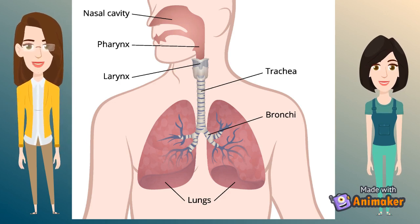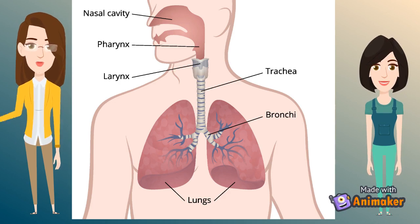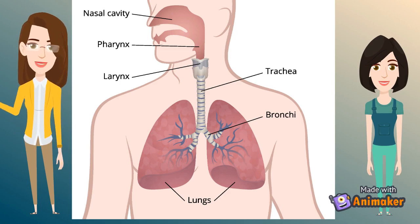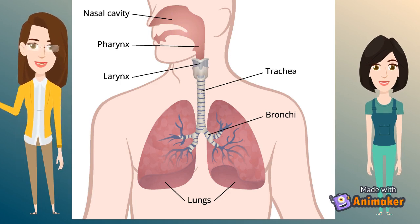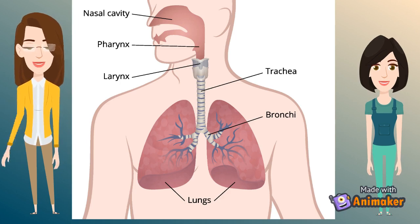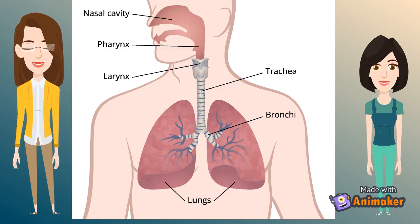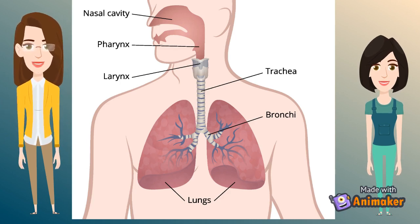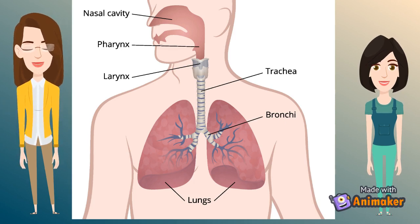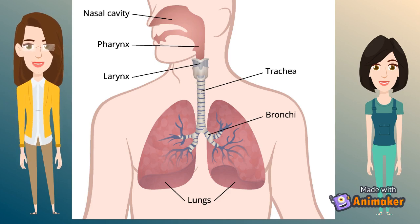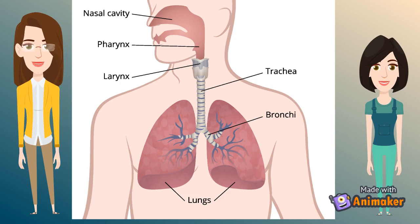After the larynx, you can see the trachea. The trachea, or windpipe, rises between the larynx and moves down the neck. The wall of the trachea consists of C-shaped cartilaginous rings which give hardness to the trachea and maintain it by completely expanding. The trachea extends further down the breastbone and splits into bronchi, one for each lung.